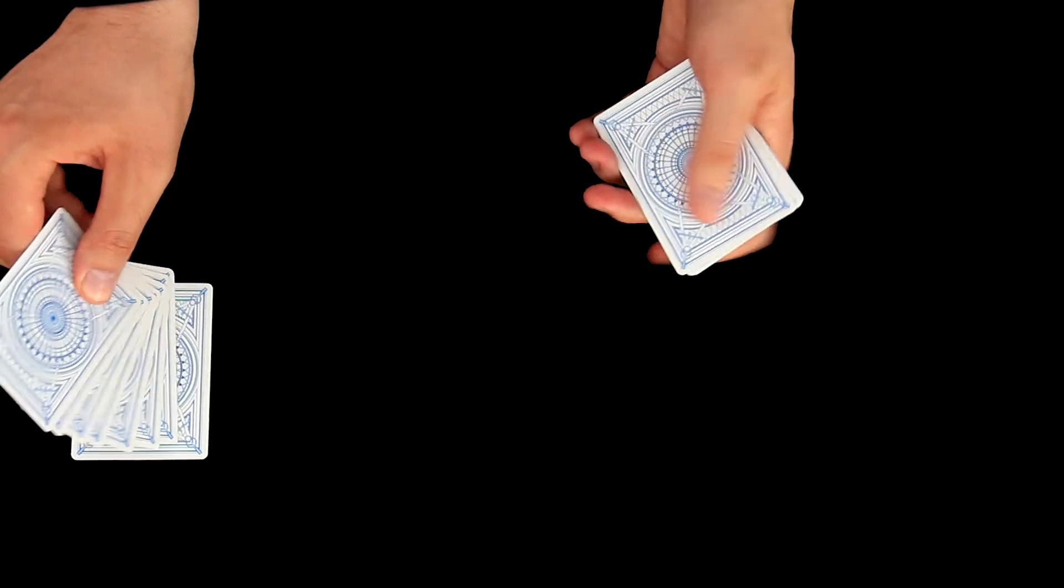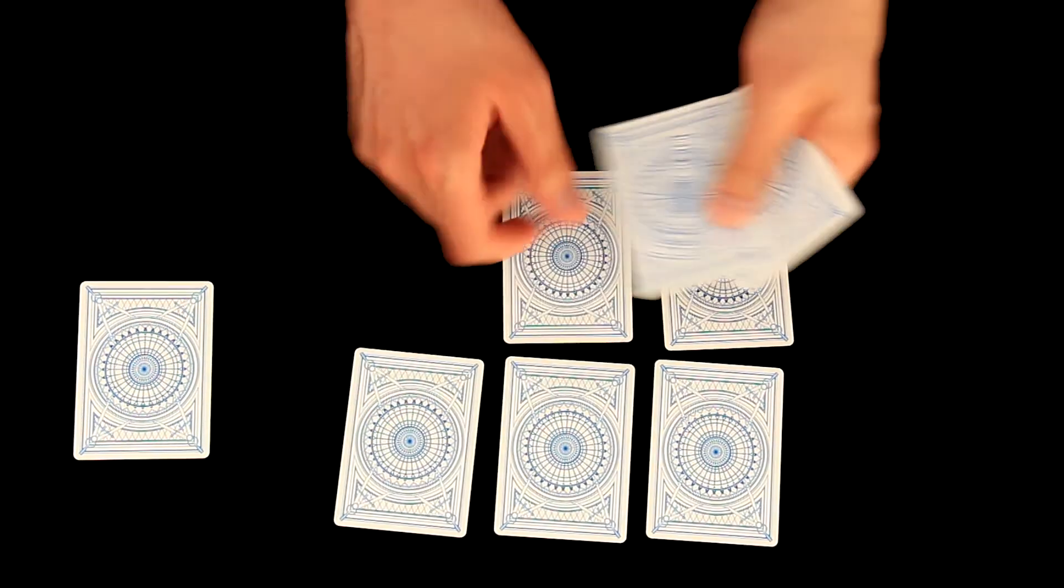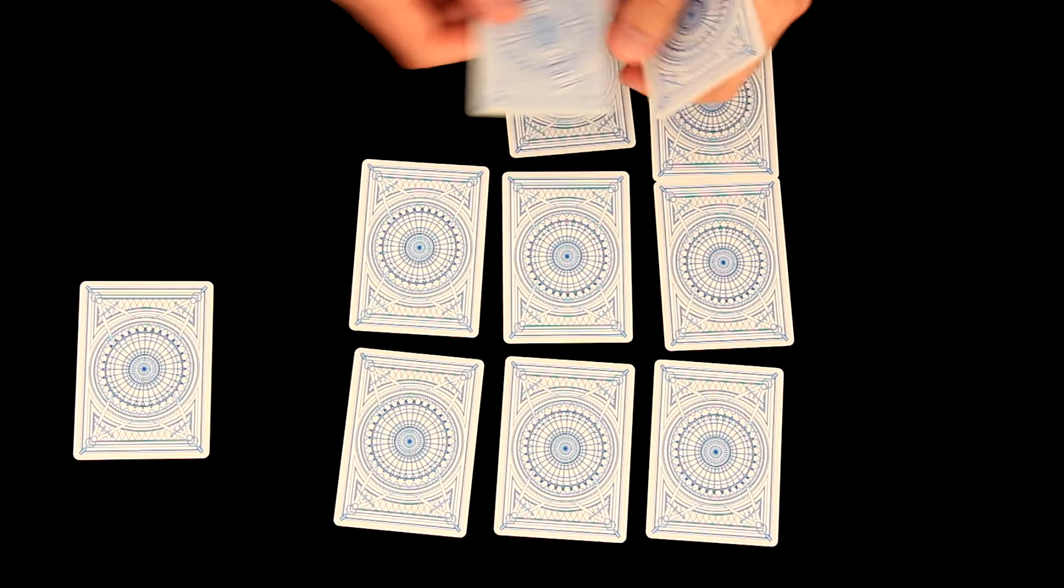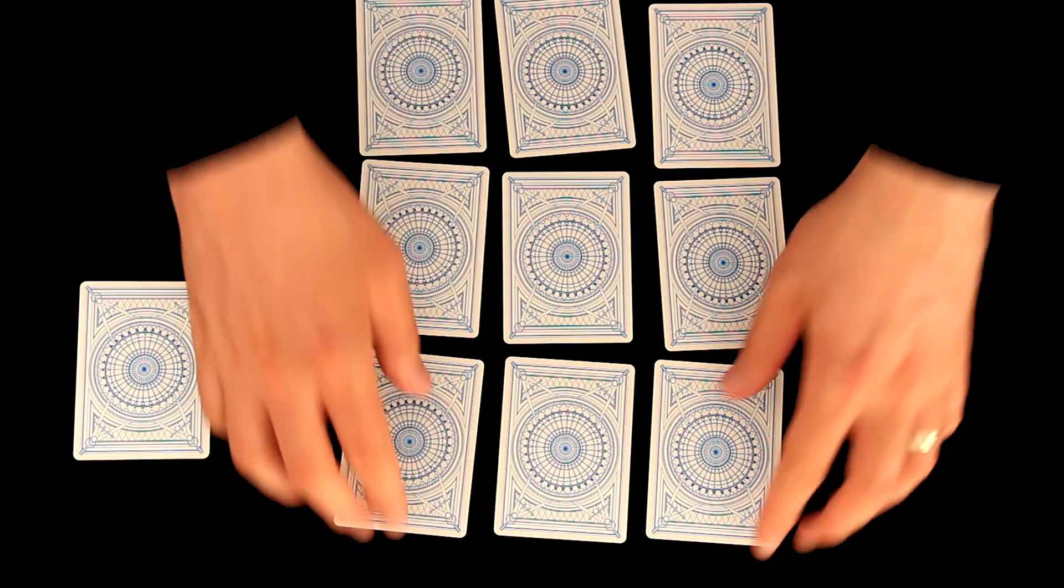So we will place it on a table. We will now deal cards on the table into three rows like this and I will now turn over this top row.